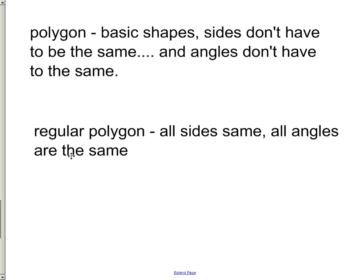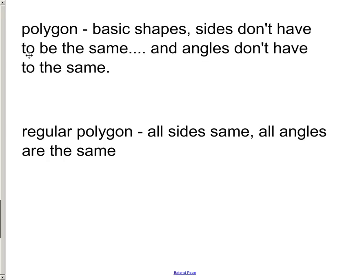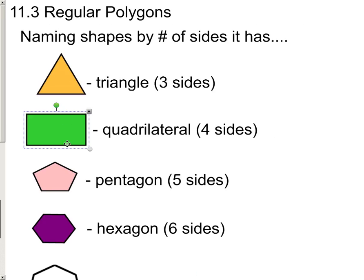And that's usually what you're looking at a lot of times. Like when we look back here, this is not a regular polygon because the sides are not the same. The angles are the same, but this side is definitely shorter than this one.